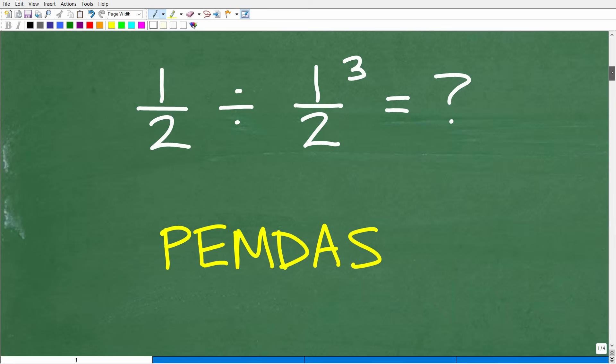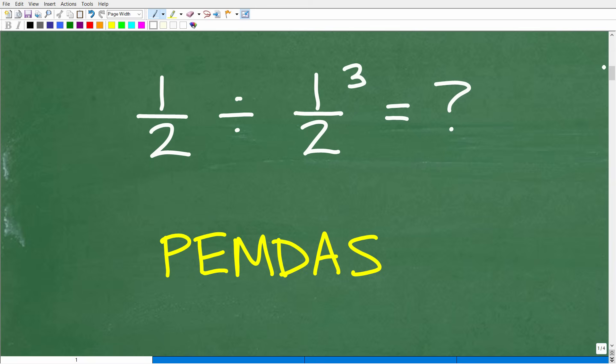Okay, so we have 1 half divided by 1 half cubed. Now, in mathematics, anytime you have more than one operation going on, we need to consider something called the order of operations.